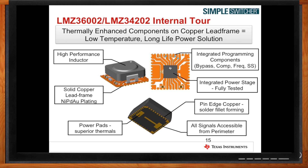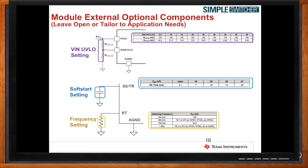What if I want to change some of the defaults like the frequency? One of the key features of our power module as well as our regulator is that it has a default of 500 kilohertz. If you want one megahertz or 750 kilohertz, all you need is a resistor to change the frequency settings. The same thing with the UVLO settings — you can change that by adding a voltage divider to the PVN pin. And for soft start, you can increase the soft start time by using a soft start capacitor.